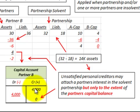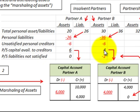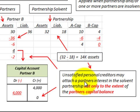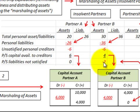Partner B has $4,000 sitting in their capital balance. They have unsatisfied personal creditors of $6,000. Using the marshalling of assets doctrine, we can only use what's in the partner's capital account — $4,000 — to satisfy these personal creditors. That leaves partnership liabilities not satisfied of $2,000, since we could only apply $4,000 of the $6,000 owed.